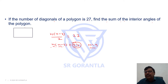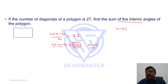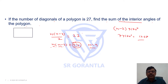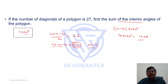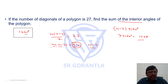So n = 9. Now the sum of interior angles of the polygon is (n − 2) × 180 = (9 − 2) × 180 = 7 × 180 = 1260 degrees. So the answer is 1260 degrees.